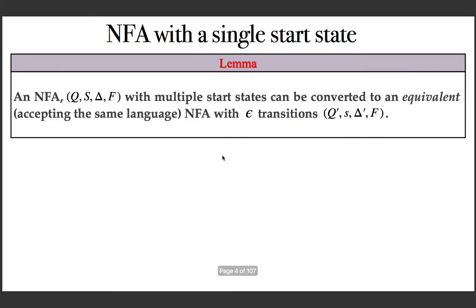To start with, we can discuss a lemma which says that an NFA (Q, S, delta, F) with multiple start states can be converted into an equivalent NFA with epsilon transitions (Q', s, delta', F), where the set of final states is the same and we have a new set of states, a new start state, and a new set of transitions.